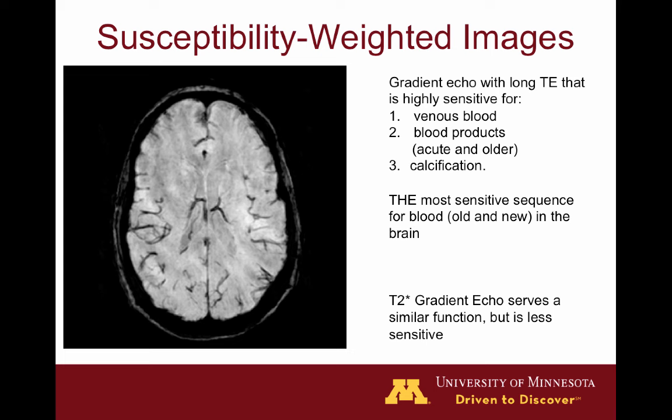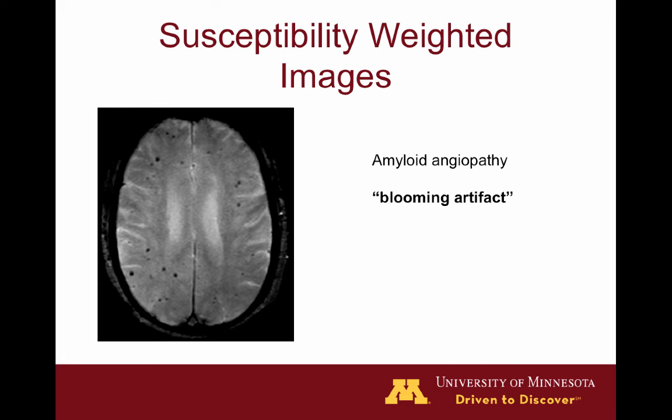Susceptibility-weighted images have been designed to accentuate any local perturbations in the magnetic field. This is especially useful for identifying small foci of calcification or microhemorrhage. Susceptibility-weighted images are fairly new, and T2-star-weighted gradient echo images are the older version of this sequence, showing slightly fewer abnormalities than SWI. Here's an example of a T2-star-weighted image showing multiple punctate foci of dark black signal through what we call blooming artifact, where the imaging abnormality appears larger than it really is.